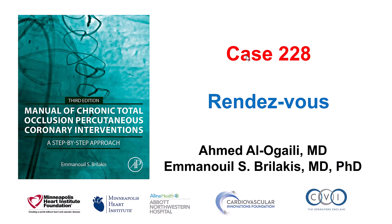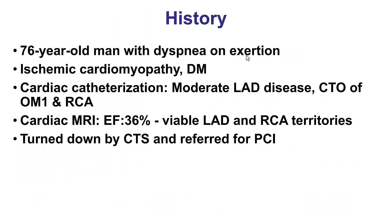This is Ahmed Talogaili and Manos Berlakis, and this is case 228 for the Manual of CTO Interventions. This case illustrates the rendezvous technique for retrograde crossing. The patient was a gentleman who presented with dyspnea on exertion. He had cardiomyopathy with an ejection fraction of 36%, viability in the LAD and the right coronary artery, with a CTO of the right coronary artery. He was turned down for surgery and referred for PCI.